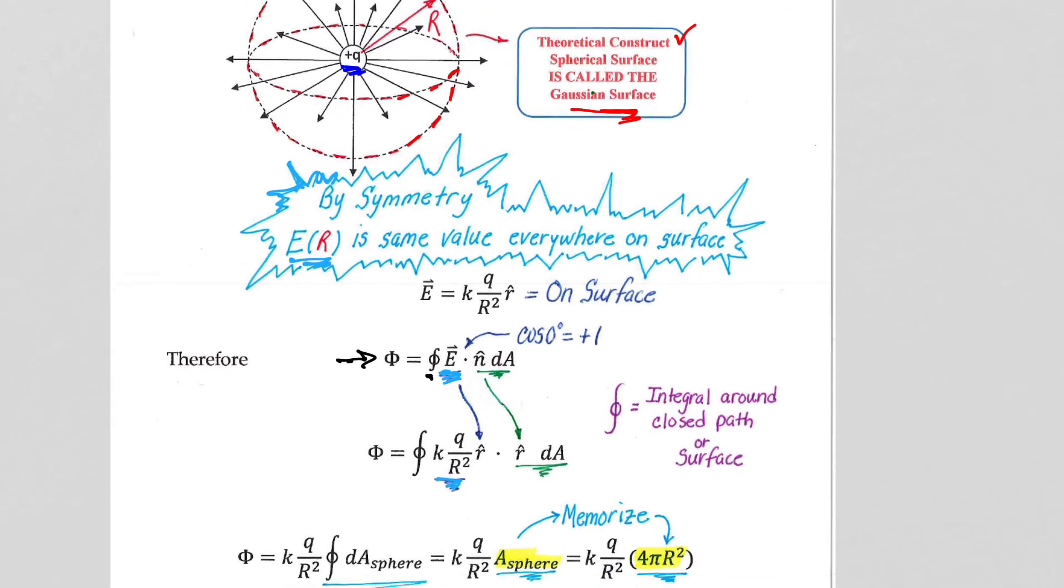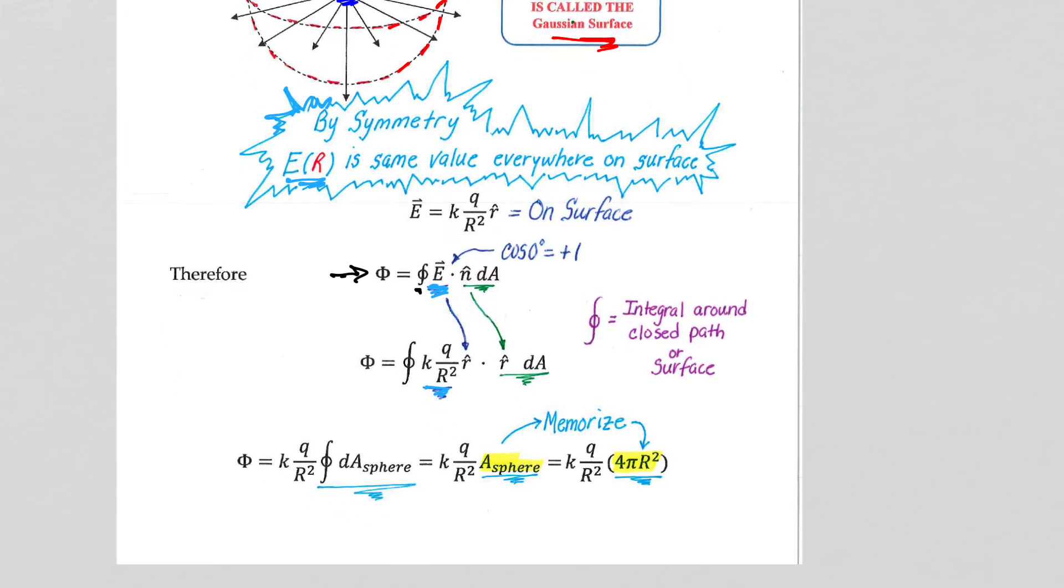Now our math really falls into place nicely. We get magnitude of the first, kq on r squared. Magnitude of the second, which is our dA, and the direction is r hat, and that's why we get the cosine of zero degrees or positive one, because we have the r hat dot r hat.